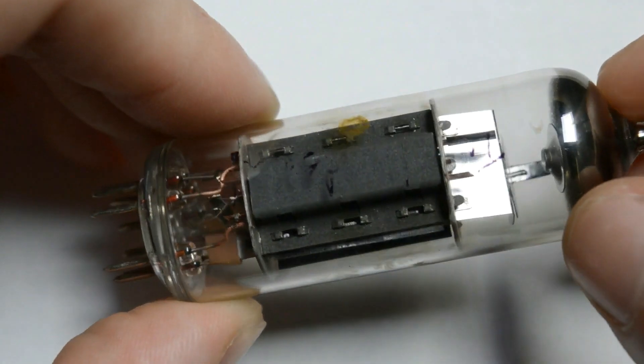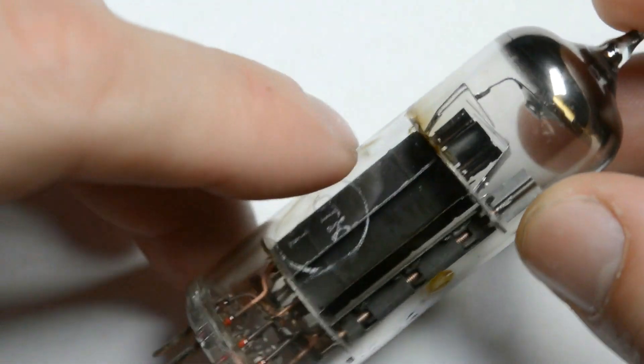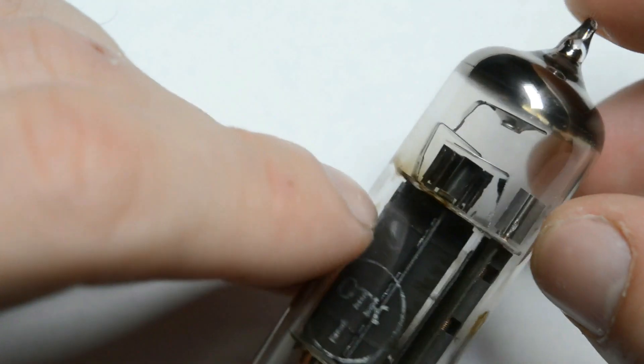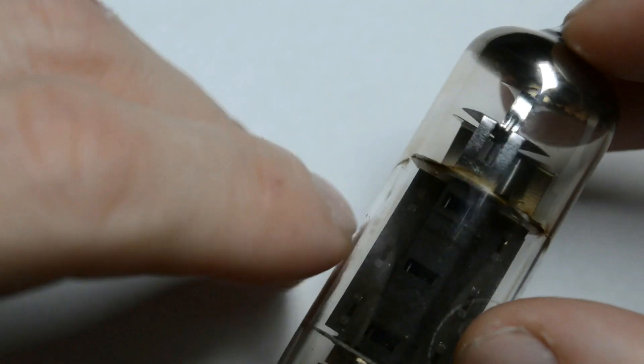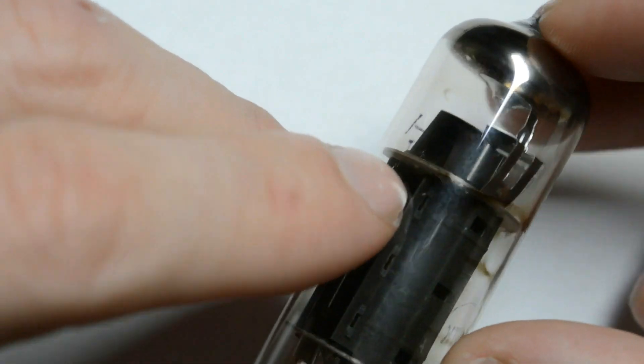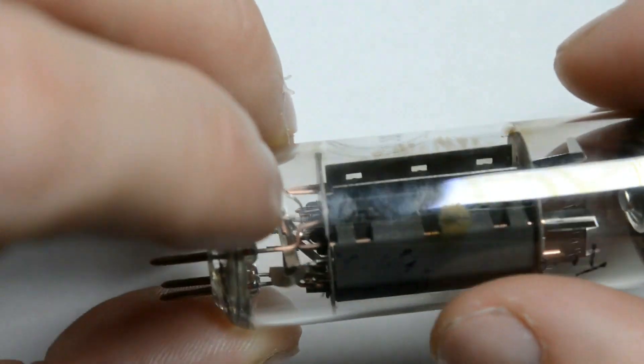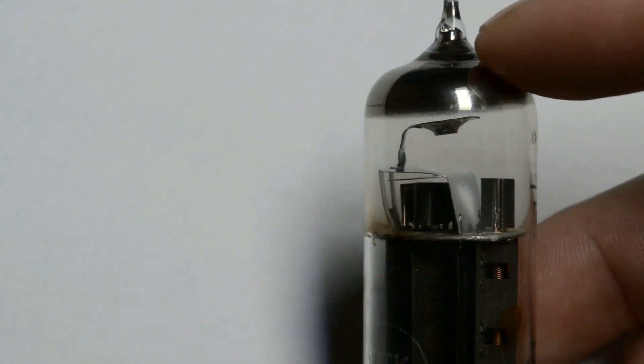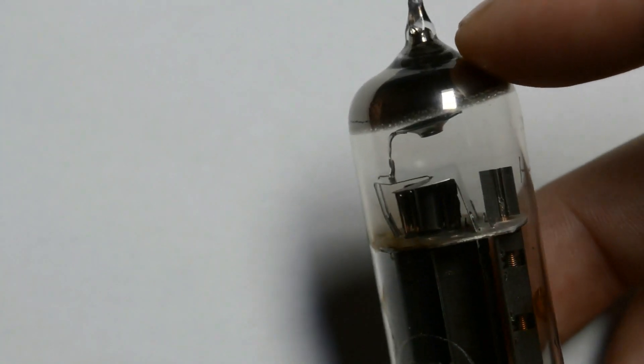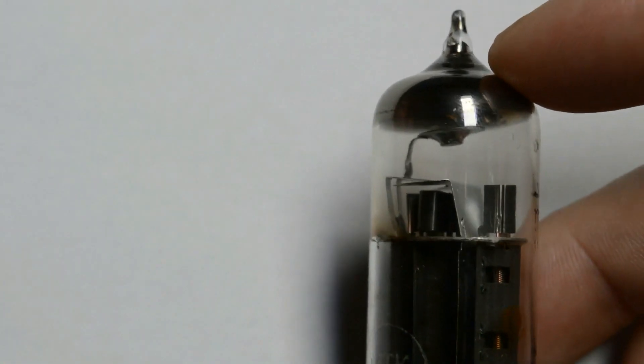This is the tube I will be taking apart today. As I mentioned before, this is the Russian version of the ECL-82, the 6F-3P tube. Unfortunately, you can't really make out the name anymore since it got rubbed away in time.